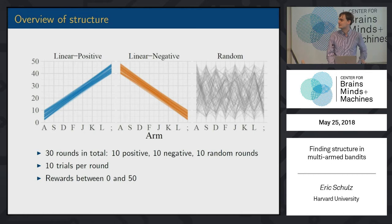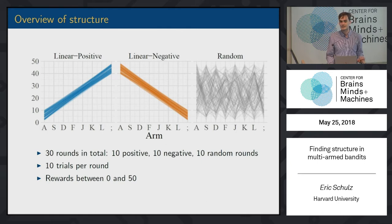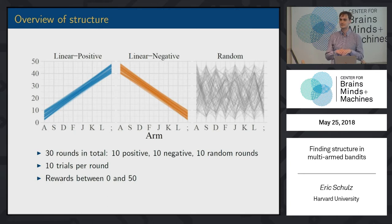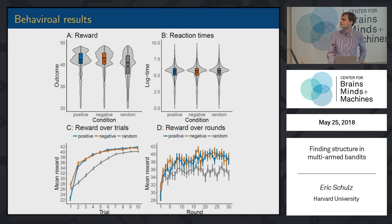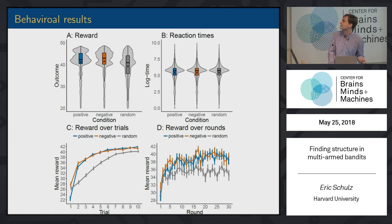In the first simple experiment, we tested this. People did 30 rounds of these bandit tasks. Each round had 10 trials. Ten of those 30 rounds had linear positive functions, 10 had linear negative functions, and 10 were just random. Which of those rounds happened at a particular point was chosen at random. We recruited around 140 participants. The results showed that people are indeed better in the structured rounds than in the random rounds — they do seem to pick up on the structure.